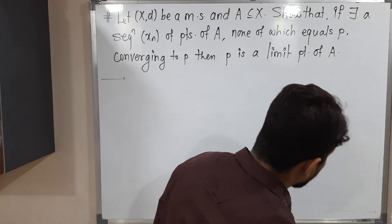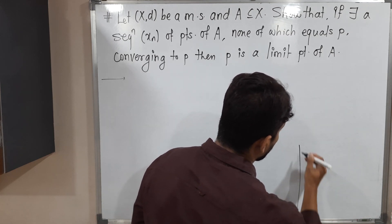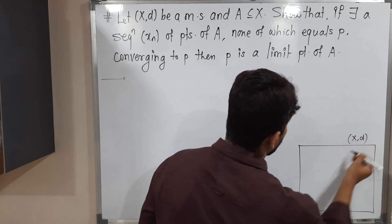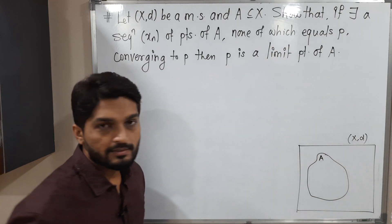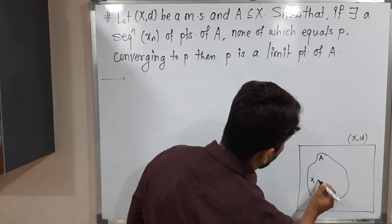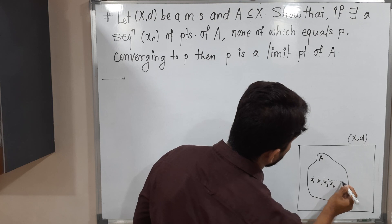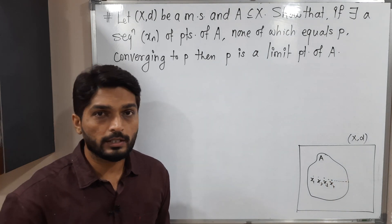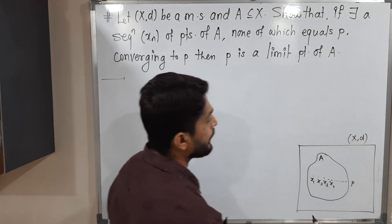Let us try to understand what is given. We have a metric space XD. They have given one set A, which is a subset of X. They have given us one sequence X1, X2, X3, X4 — such a sequence. All points, all terms of the sequence, are points of A. That sequence converges to point P.